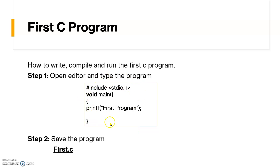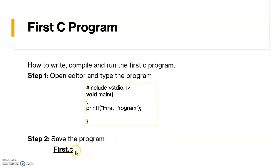We need to write this program in the editor, and then save it. When saving, any name can be given but the extension must be .c because we are writing a C program. Remember, by default Turbo C++ will consider a .cpp extension — we need to change that to .c.